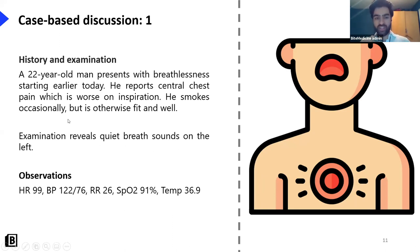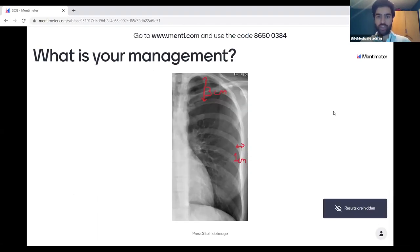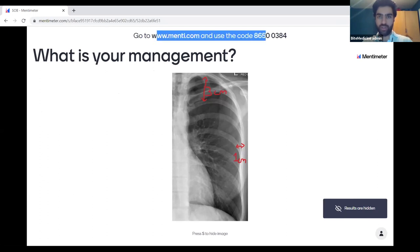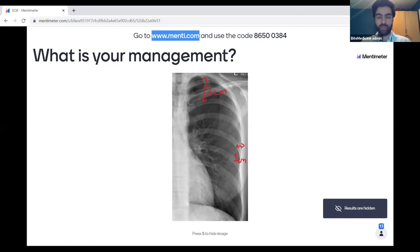In PE the breath sounds shouldn't be affected, but in a pneumothorax the breath sounds are quiet. For management — the pneumothorax measures one centimeter at the hilum and three centimeters at the apex, and the patient is breathless. Go to menti.com with code 8650 0384 to answer the management question. Options are: aspirate, chest drain, discharge, high flow oxygen, or pleurodesis.